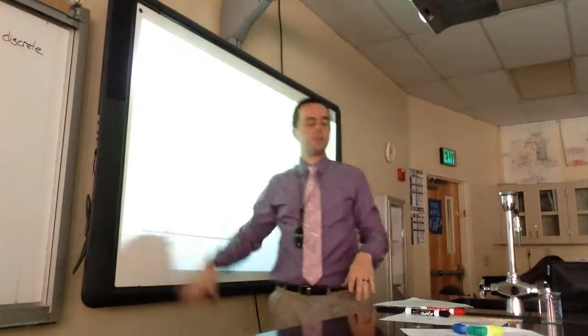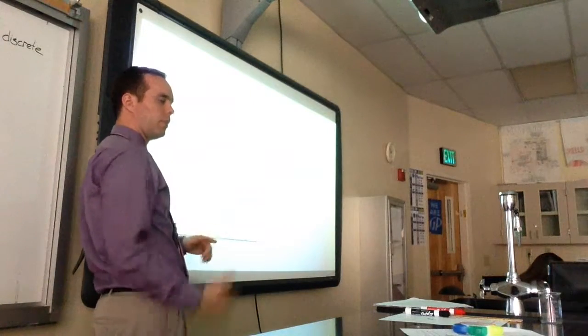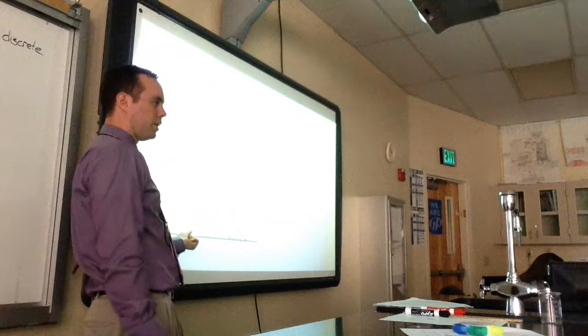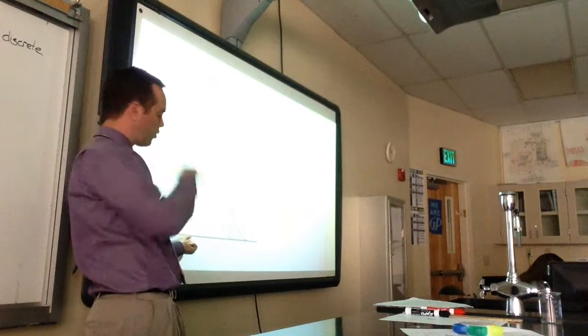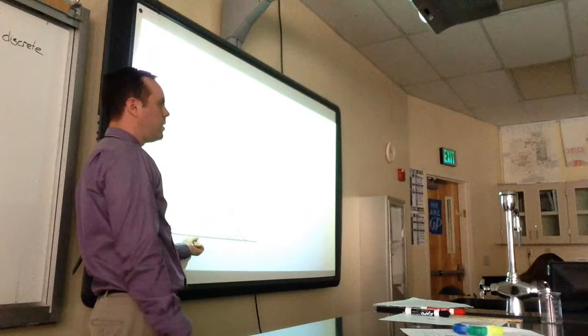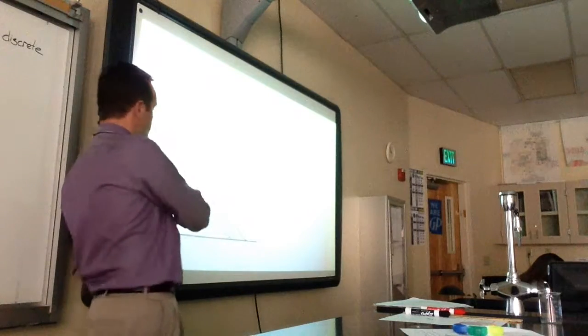So what I'm going to ask you to do here is consider this any polygenic trait you want. It can be height, it can be speed, it can be intelligence, foot size, whatever. Come up with a polygenic trait you can put on the x-axis here, and then explain to me an event that would cause this shift to happen.